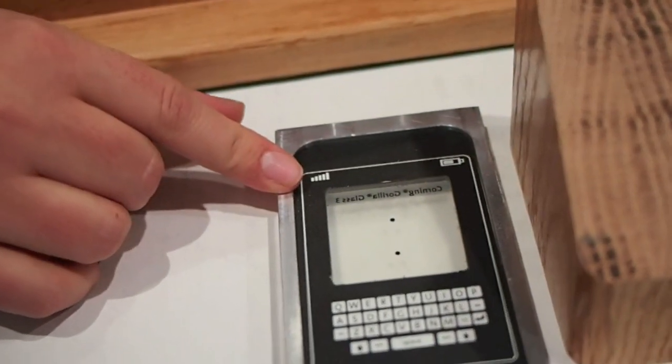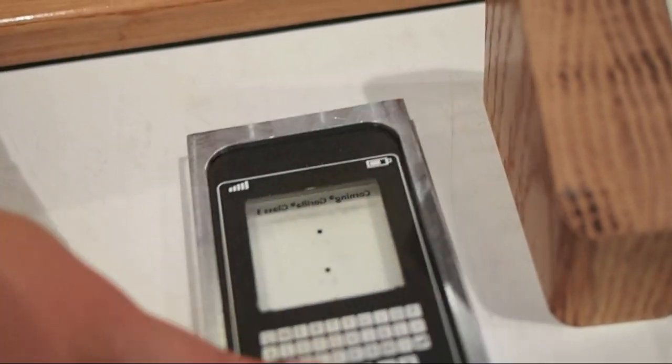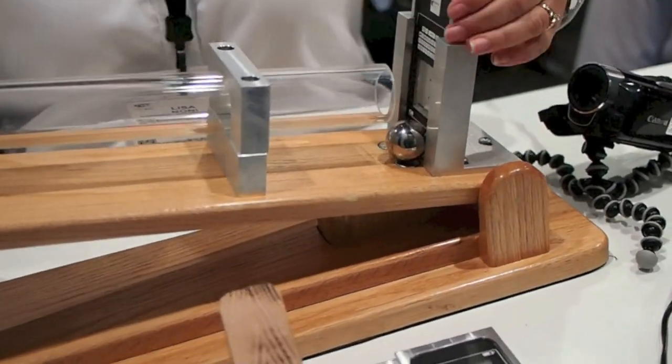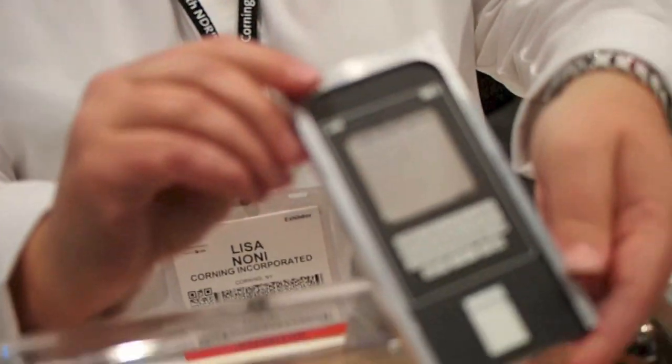So now we're going to go to Gorilla Glass 3. This is also scratched with a 7 newton scratch. And you'll see the glass survived. That it did. But we don't stop there.